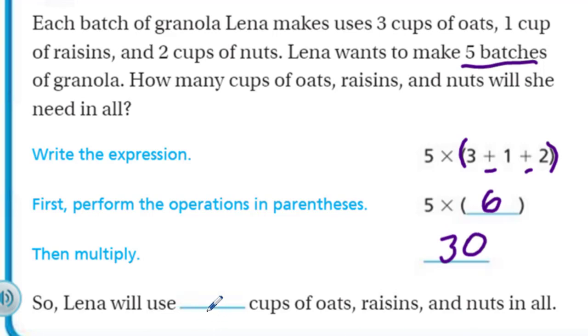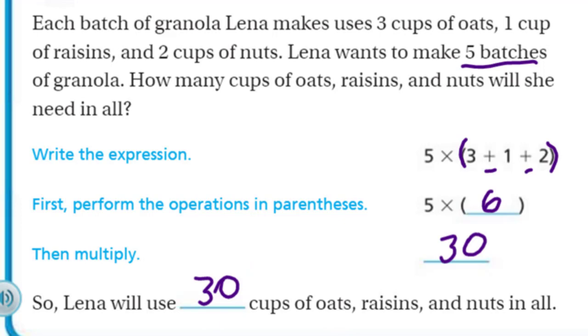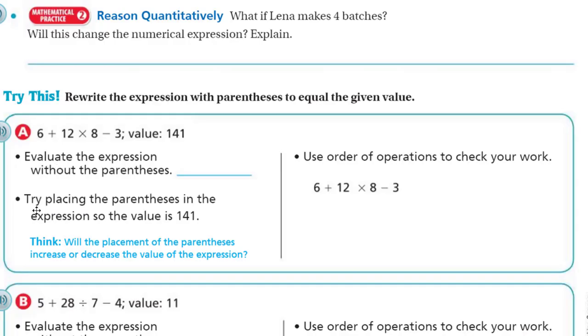So Lena will use thirty cups of oats, raisins, and nuts in all. And that almost looks like what we have here in our bowl right there. Woo-hoo. Yeah, yeah, yeah. I used to say woo-hoo. Yeah, yeah. I don't know. We'll see how it works.